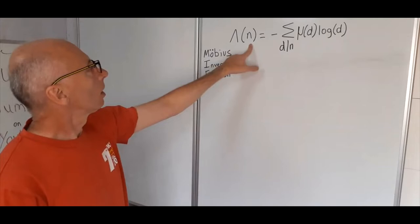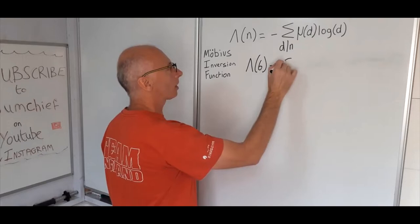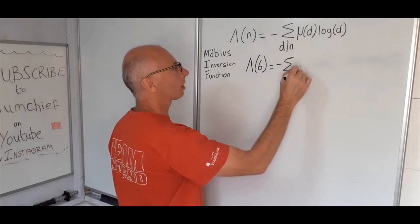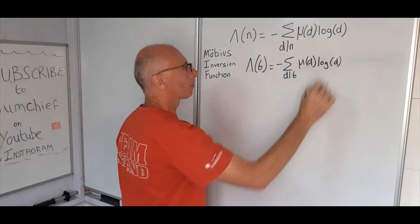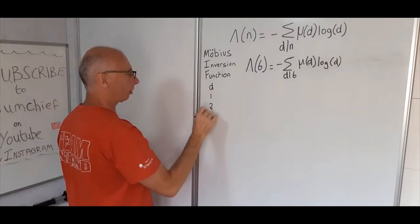Let's try the number 6. What we're hoping for here is that the Von Mangoldt function for 6 equals the negative total of all the sums of the divisors of 6, mu of d times log of d. The divisors of 6 are 1, 2, 3, and 6.